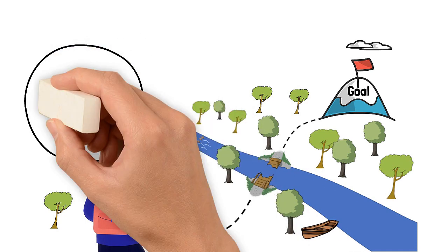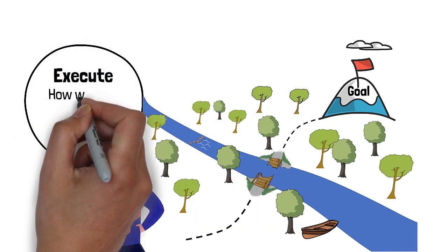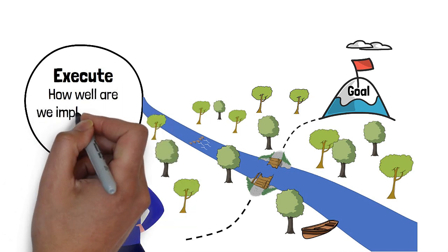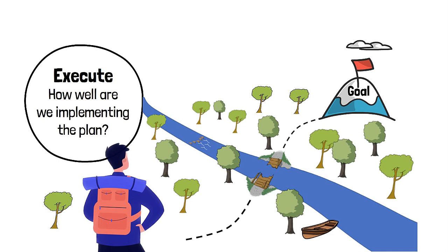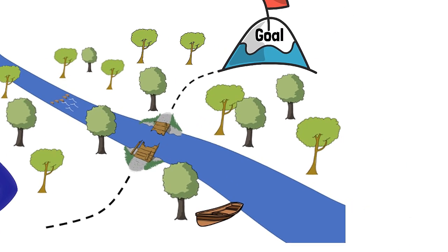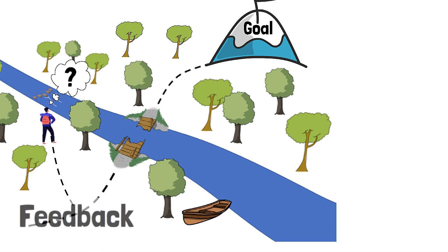We also experience decision-making in terms of execution, asking: how well are we implementing the plan? In selecting a plan, we mentally execute, which is the initial basis for developing task motivation. But then we must actually implement the plan, and it is when we physically execute that we begin to receive feedback, allowing us to monitor our progress, update the situation, and make adjustments to our plans as the situation evolves.